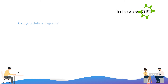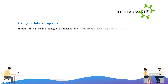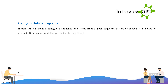Can you define an n-gram? An n-gram is a contiguous sequence of n items from a given sequence of text or speech. It is a type of probabilistic language model for predicting the next item in such a sequence in the form of (n-1).